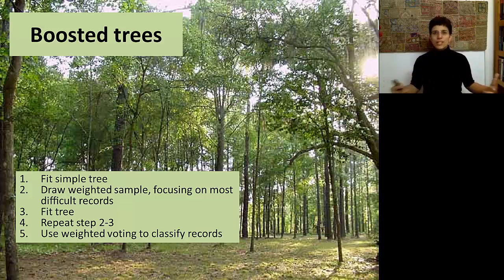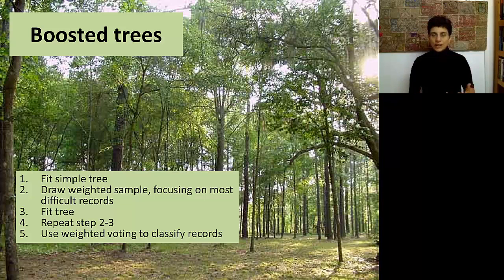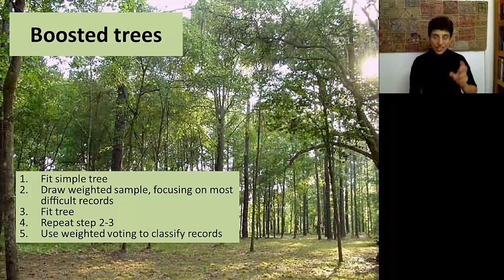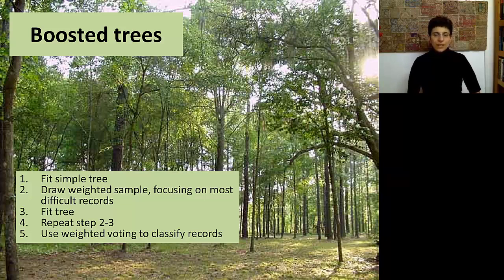Another way to create multiple trees and combine them is called boosted trees. It's an iterative approach where we learn from the mistakes of simple earlier trees. We start by building a simple tree, then look at the mistakes that tree made and focus on those to improve the next round. This is done by giving the original data weights based on how well the tree predicted them — the most difficult records with the biggest errors get the heaviest weights. We keep focusing on the most difficult-to-predict results from the previous tree, and finally use weighted voting across all trees to generate new classifications.